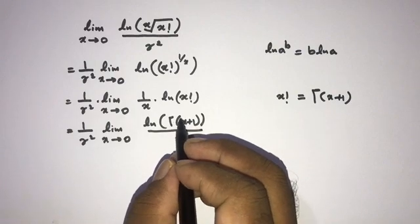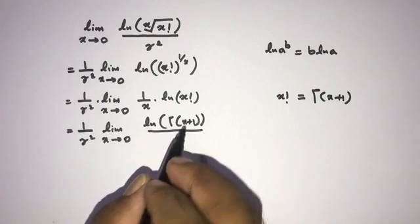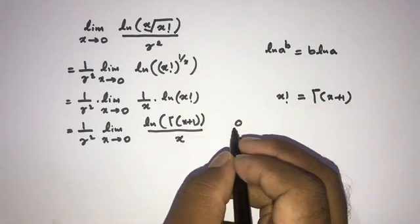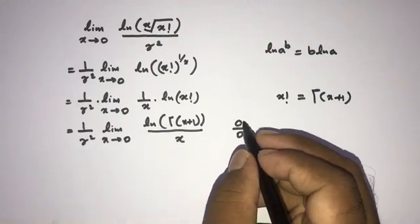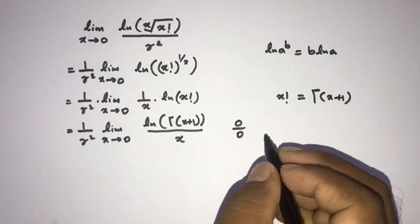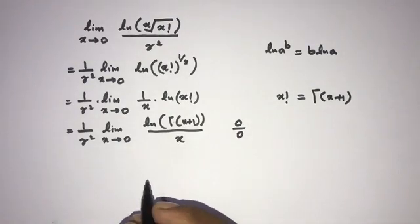Gamma of 1 is equal to 1, and natural log of 1, so this is equal to 0 over 0. Now 0 over 0 form, and this is indeterminate form. So what can we do?